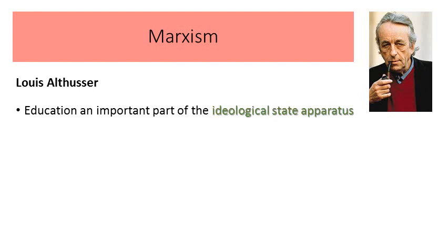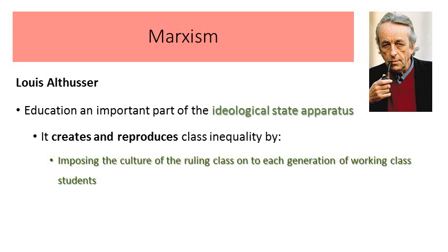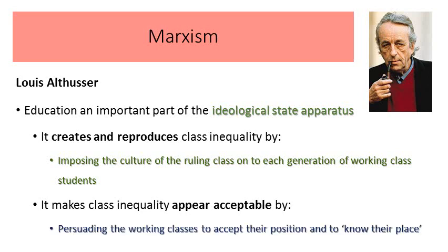Louis Althusser is saying that education is an important part of the ISA or ideological state apparatus. It creates and reproduces class inequality by imposing the culture of the ruling class onto each generation of working class students. Middle class teachers teach working class students and tell them where their place is in society, what they are likely to achieve in their lives, who they should look up to, and what rules they should obey. It makes class inequality appear acceptable by persuading the working classes to accept their position and know their place — and so it's a very powerful tool for maintaining the status quo.